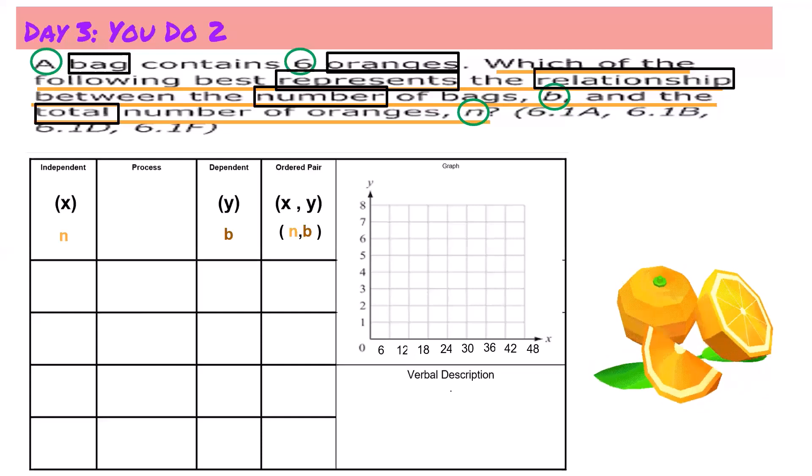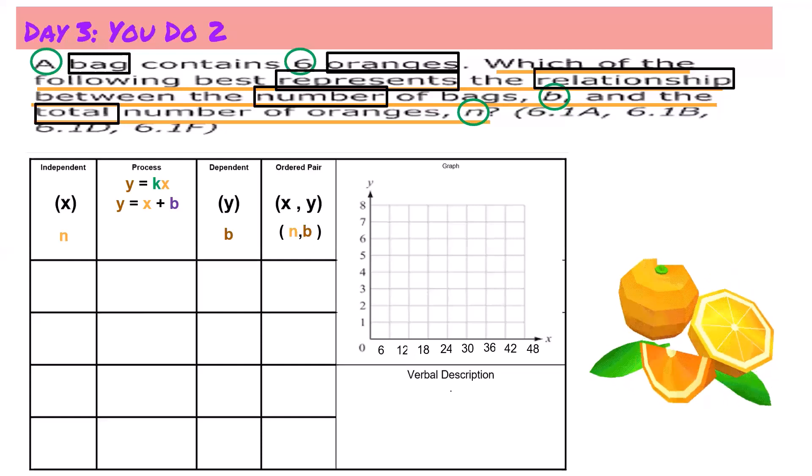Also, now I need to figure out if it's multiplicative or additive. Well, I know that for every one bag that I have it's going to equal six oranges. So if I have two bags, it'll be 12 oranges. And I also know that if I have zero oranges, I would need zero bags.